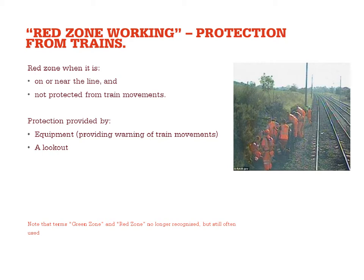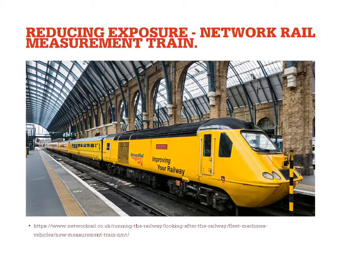We can protect workers from trains, but there are also other hazards such as slip, trip, and fall hazards, electric shock hazards, and vegetation. Another means to protect track workers is to reduce the exposure — reducing the requirement for them to go into this trackside hazardous area. One such means is the Network Rail measurement train, which travels up and down the network and measures the gauge and rail condition so we don't have to send people out to inspect tracks as frequently. This is now being implemented in some passenger rolling stock so we can get more and more data and ideally reduce the requirement for people to go trackside.